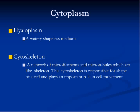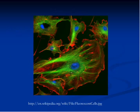Cytoplasm can be further divided into two components. One is known as hyaloplasm, which is a shapeless medium just as water, and the other one is known as cytoskeleton.